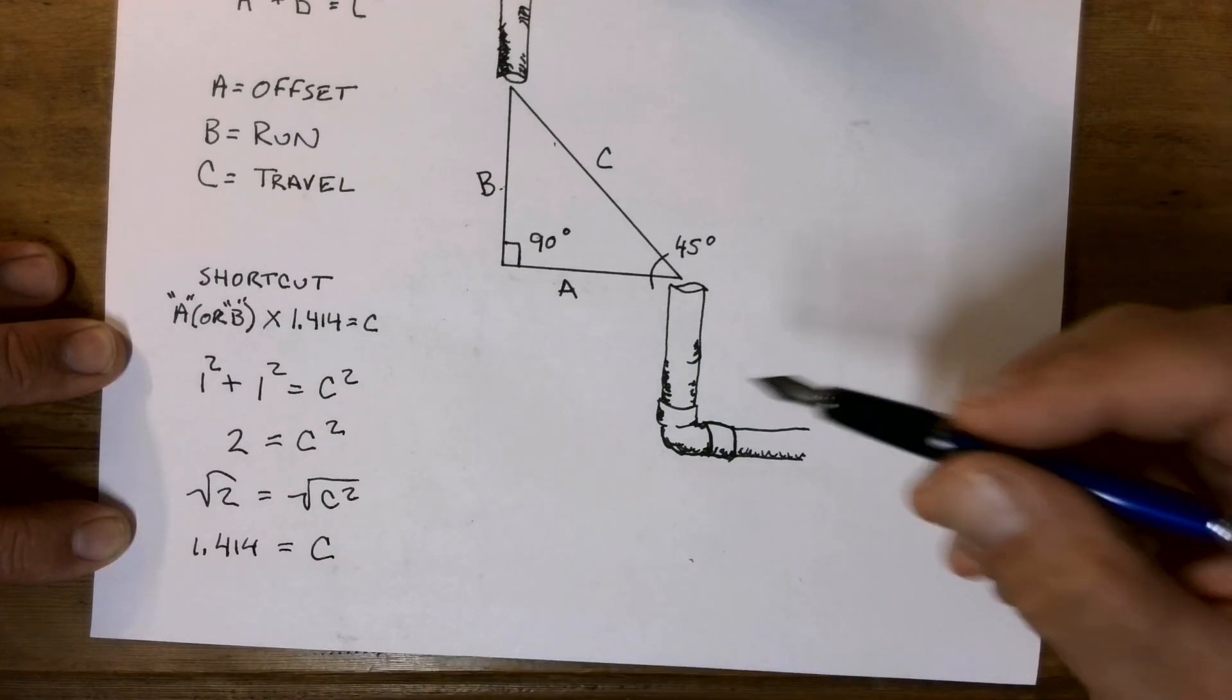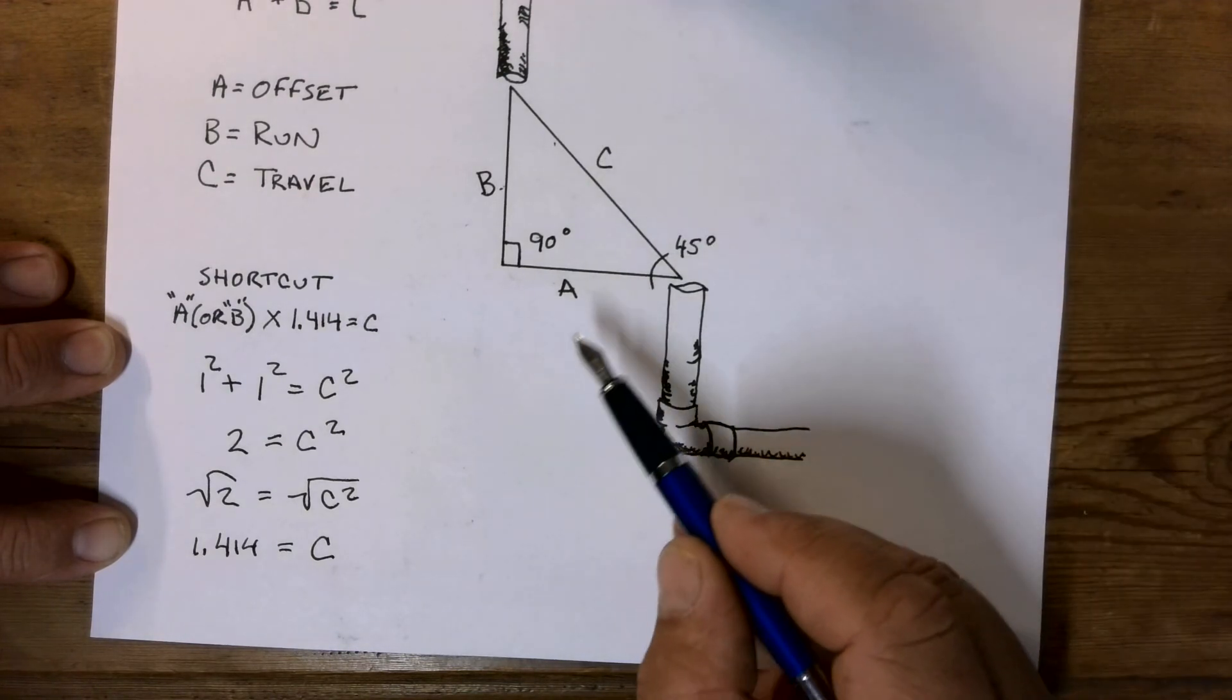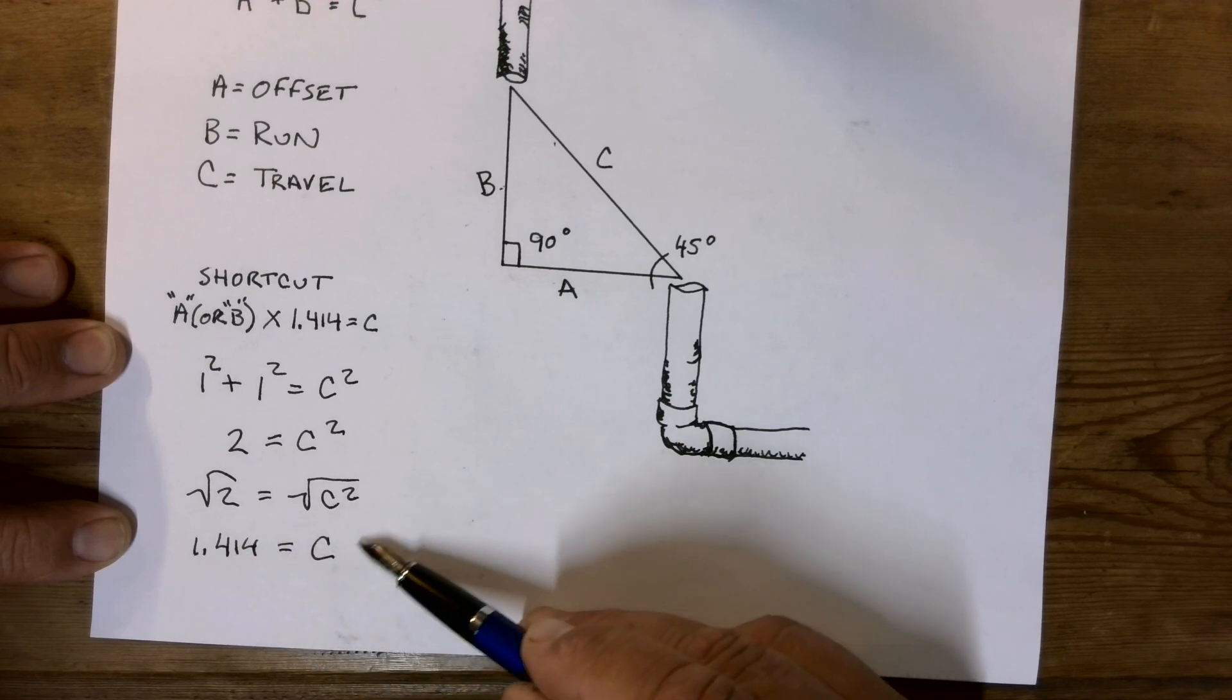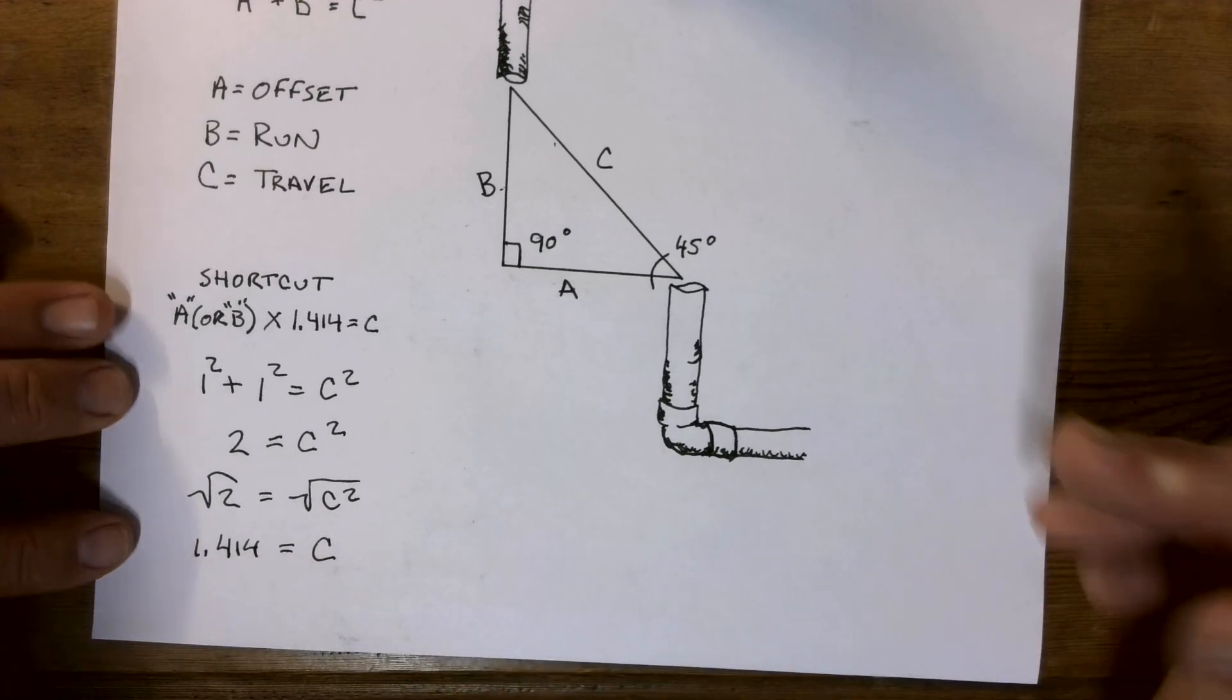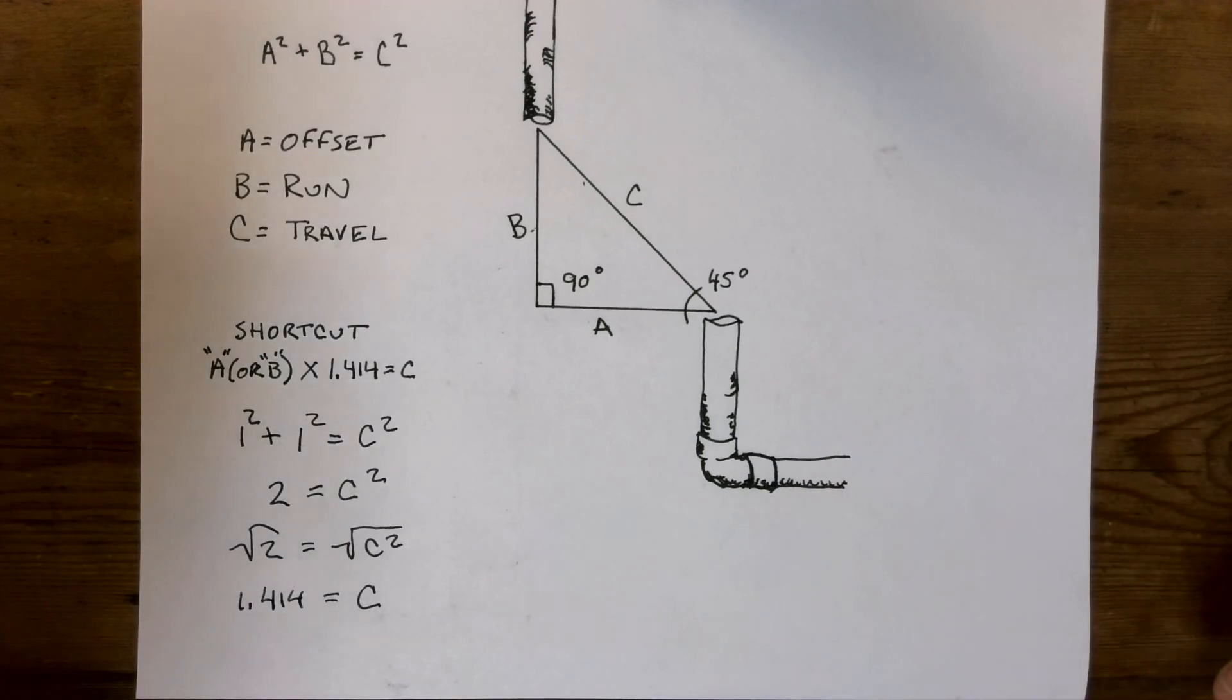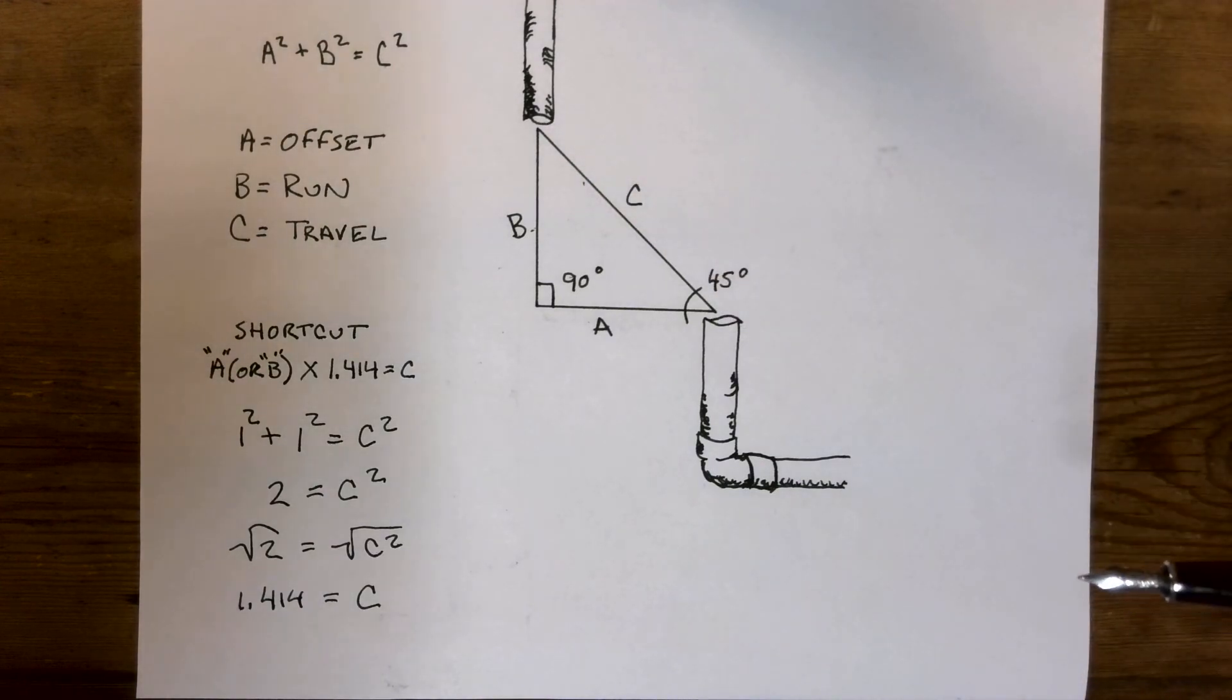So now I can take, because 1 times anything is going to give me this number, I take anything and multiply it by 1.414, and that will give me C. So there is your demonstration as to how a plumber comes up with his travel for a 45-degree offset.